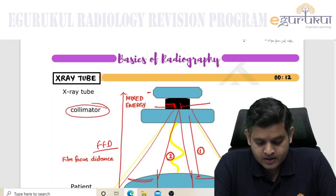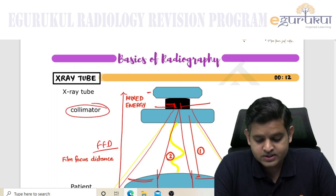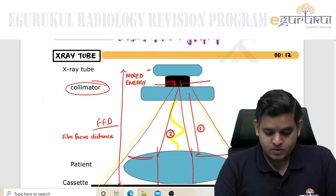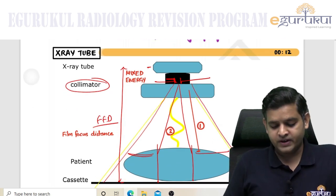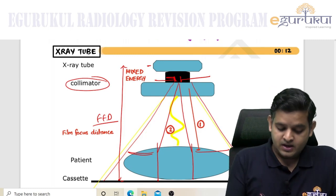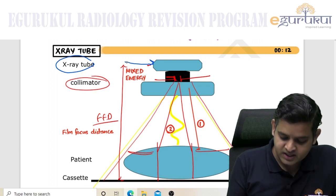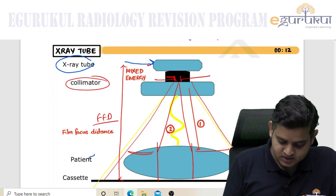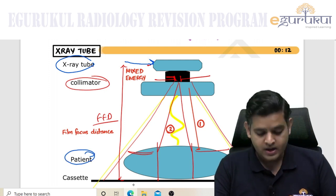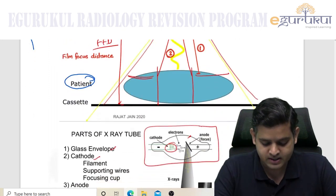In the individual imaging section, the first topic we will be discussing is the x-ray based investigation. If you look at a general diagram of an x-ray tube, this is how the image is being formed. X-rays are generated at the tube, cross the patient, and reach the cassette. Now let us talk about each part in detail.